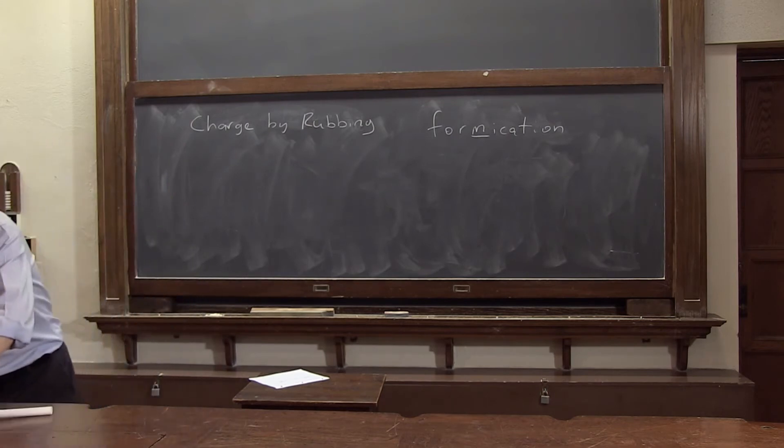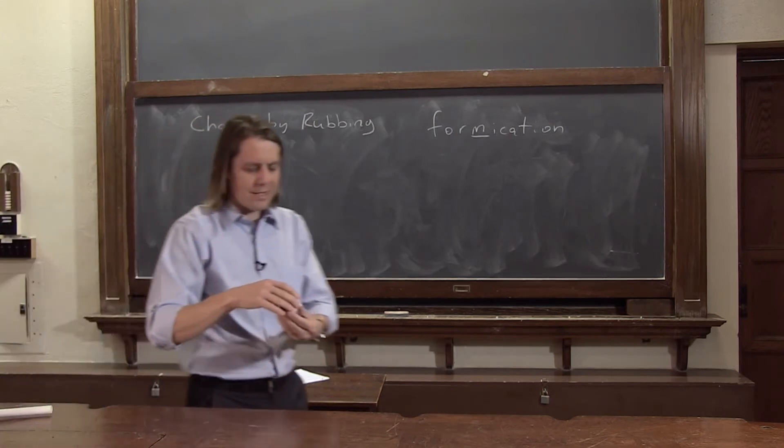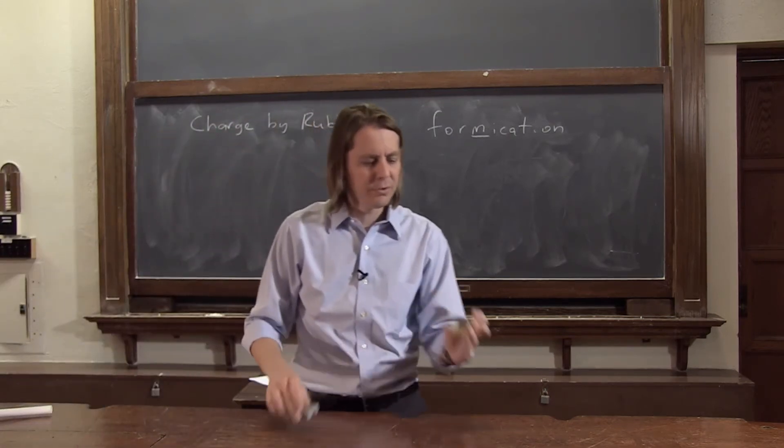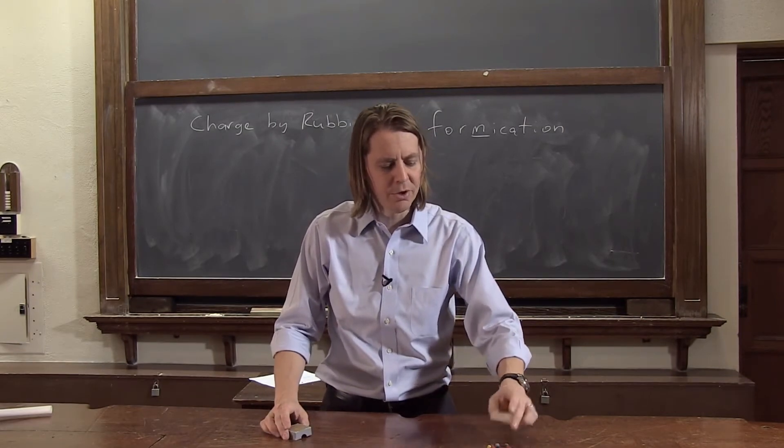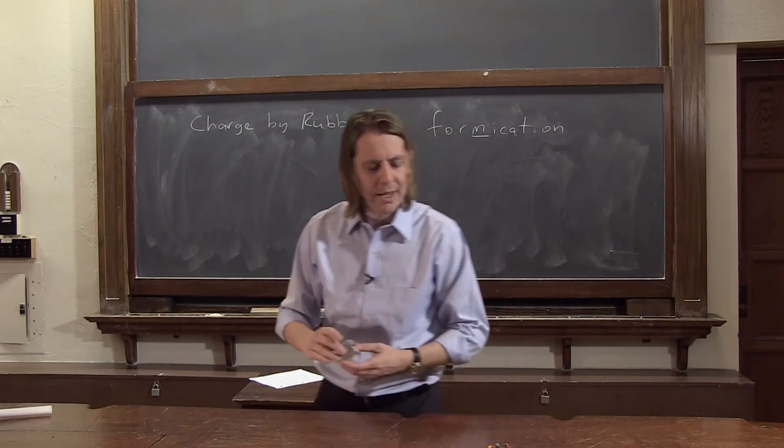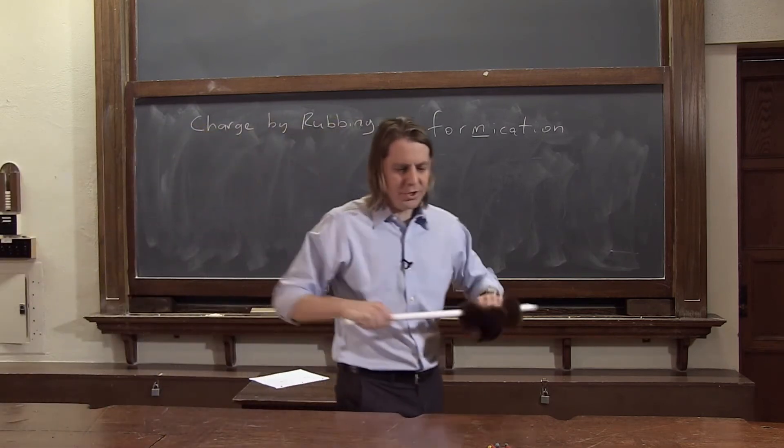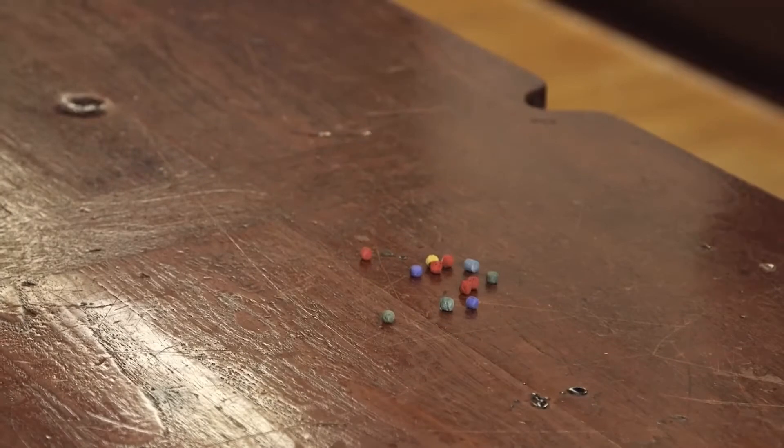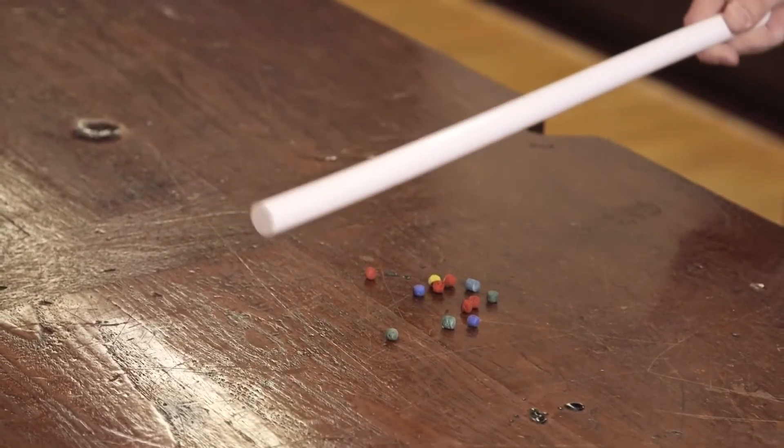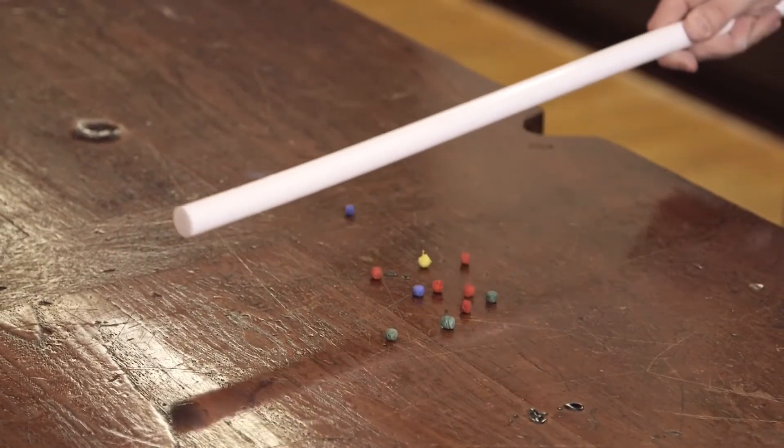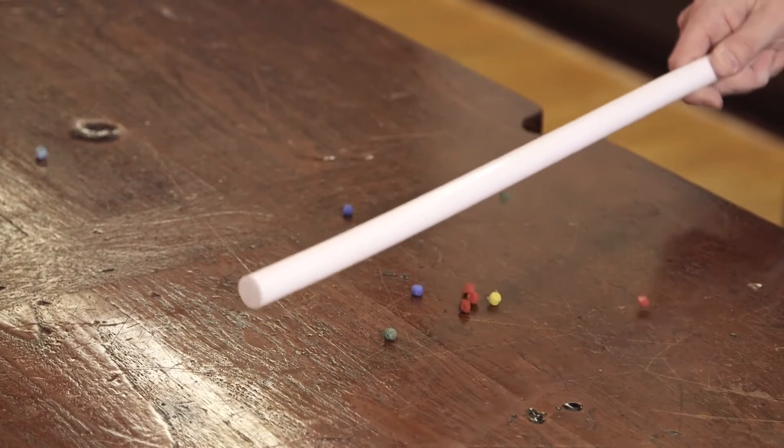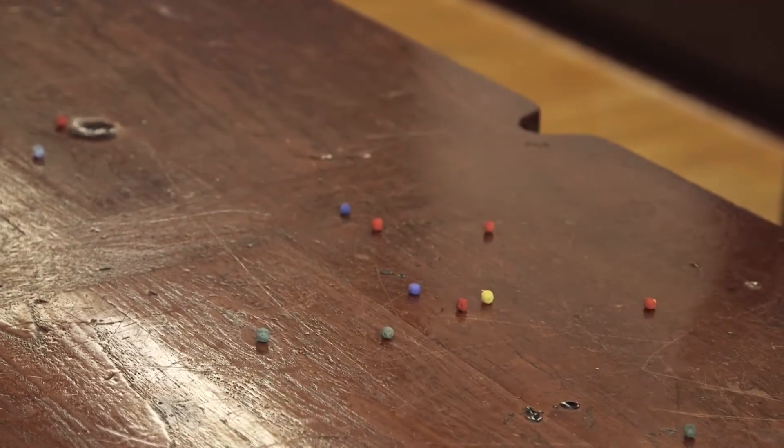A third effect that you can see with a charged object is I'll take these pith balls. These are little, really light balls that have been colored to look nice. And they tend to get charged up. And if I bring the Teflon rod charged near the pith balls, you can see as I move it across, they start to move. And they fly around under the influence of the charged rod.